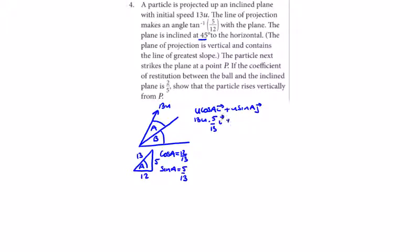So we have 13u times cos A, which is 12 over 13 in the i-direction, plus 13u times sin A, which is 5 over 13 in the j-direction. So canceling my 13s, I get 12u in the i-direction plus 5u in the j-direction for my initial velocity.